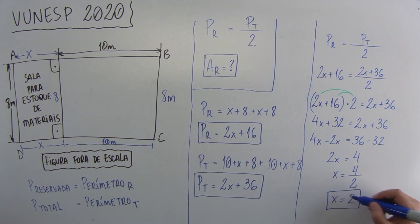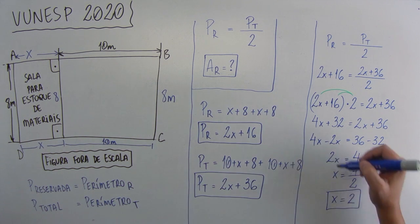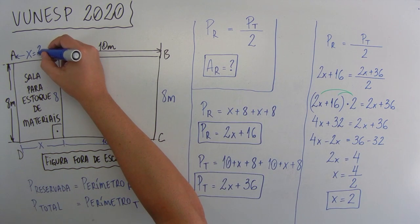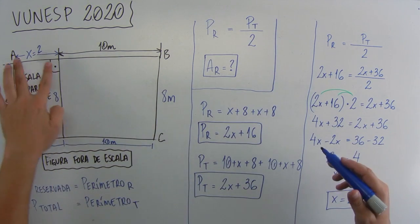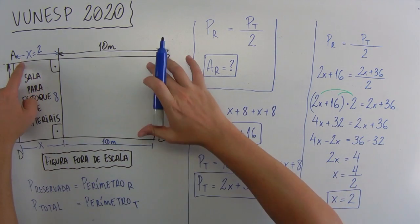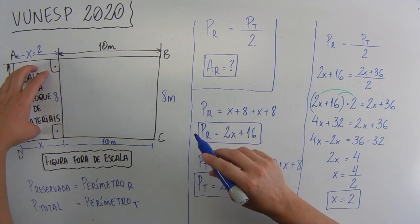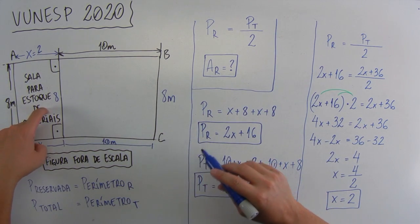Então, a gente acabou de descobrir quanto vale esse X, que vale 2 aqui, e aqui vale 2. Quer dizer, então, que esse ladinho vale 2, no total vale 12, e a gente quer a área da parte reservada para o estoque aqui de materiais.